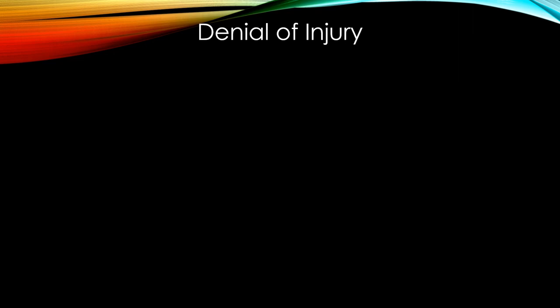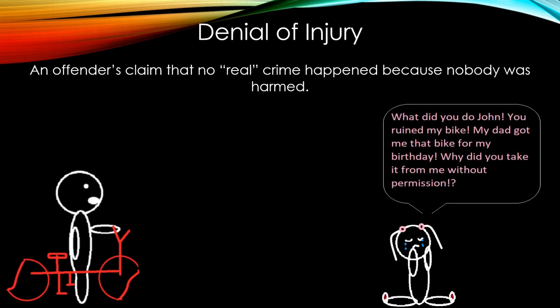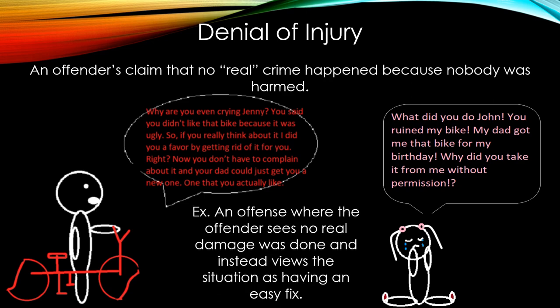Denial of injury is an offender's claim that no real crime happened because nobody was truly harmed. In the example, John takes Jenny's bike without permission and ruins it, then says: 'Why are you even crying? You said you didn't like the bike because it was ugly. I did you a favor by getting rid of it — now your dad can get you a new one you actually like.' The offender sees no real damage was done and views the situation as having an easy fix.